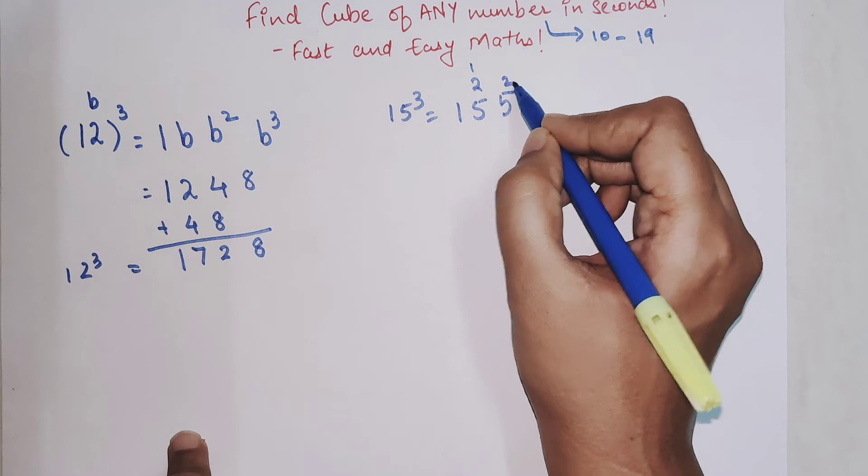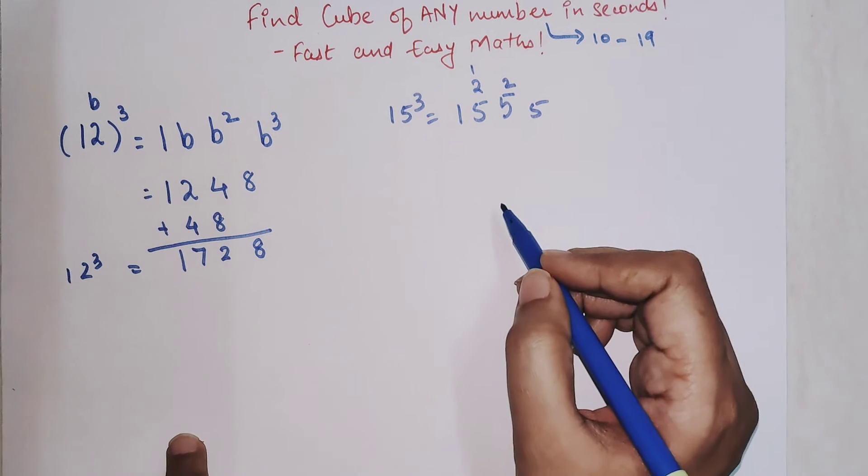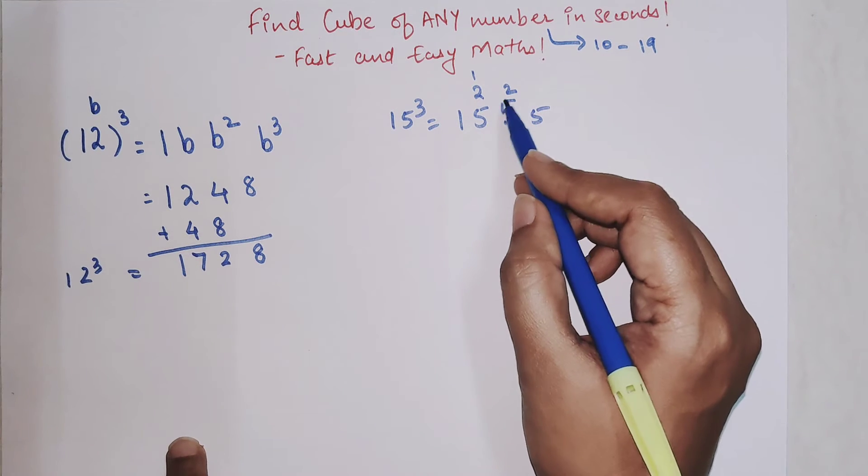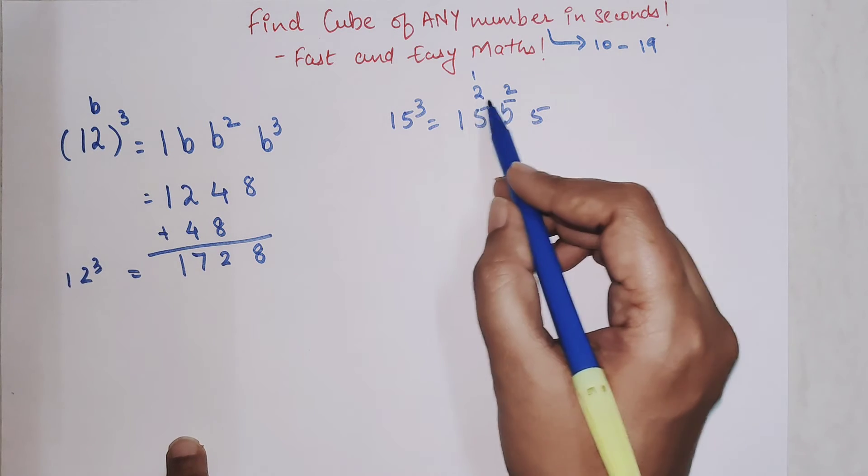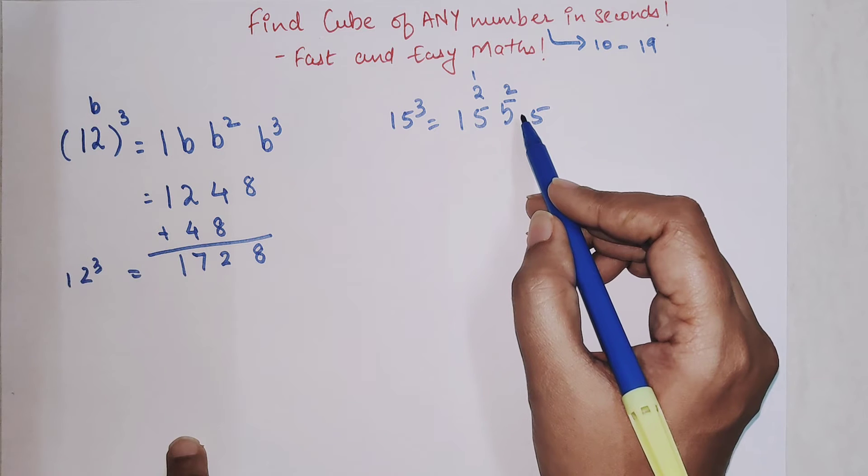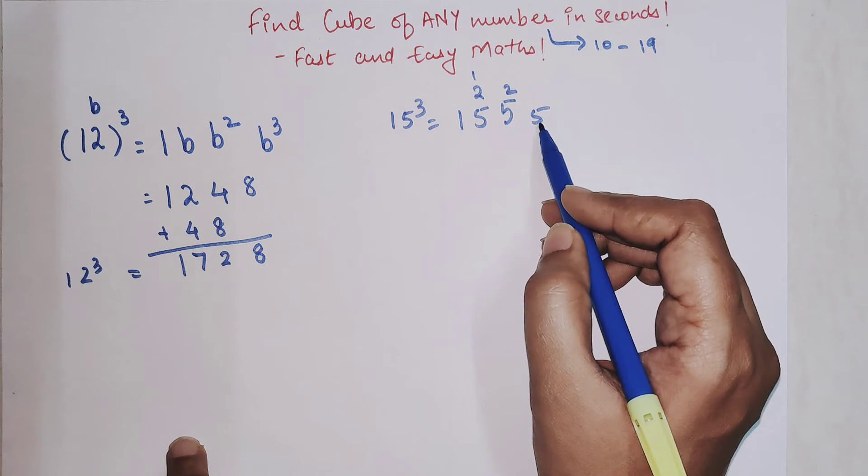So here you will write one, two, and five. Please understand one and two do not get carried over here. It gets carried single digit format.